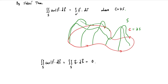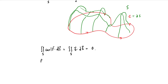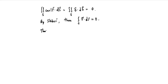By Stokes' theorem, this then implies that the path integral around the boundary of F·dr is also zero. We proved in a previous section, back in 16.3, that if the path integral around any closed curve of F·dr is equal to zero, then that means that this integral is independent of path.